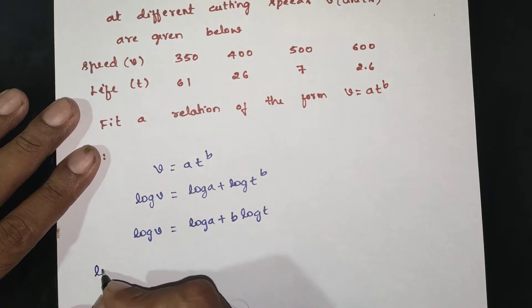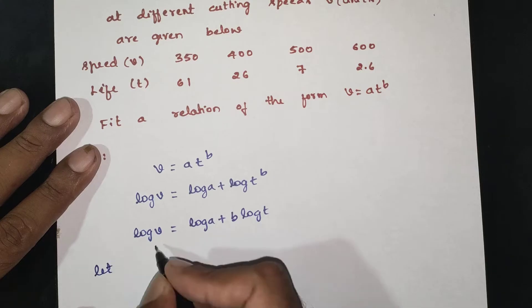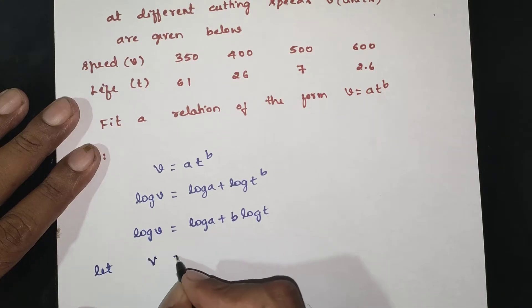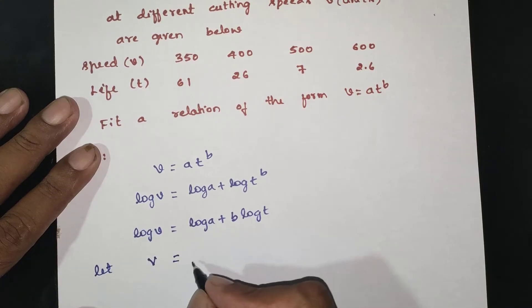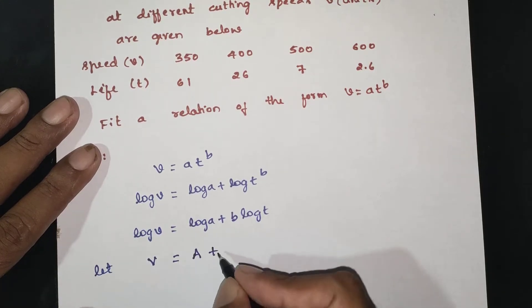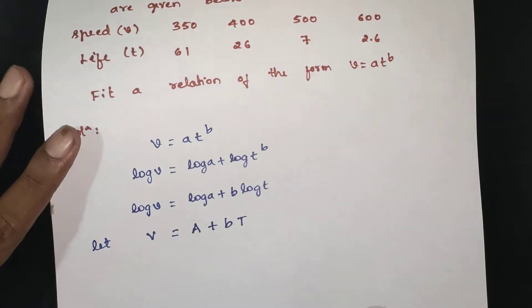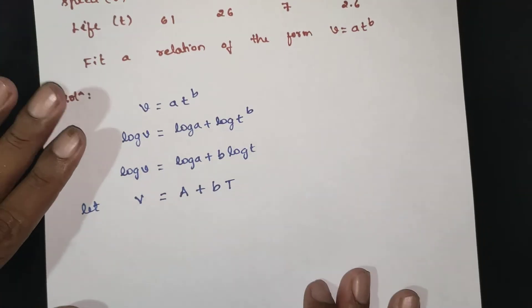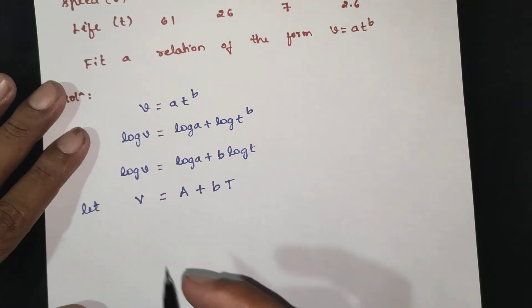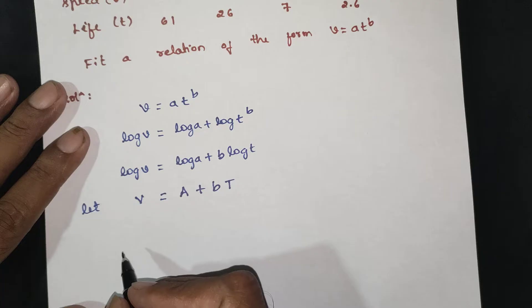Let log v (small v) be equal to capital V, and log t be equal to capital T. Now we will proceed with the substitution.